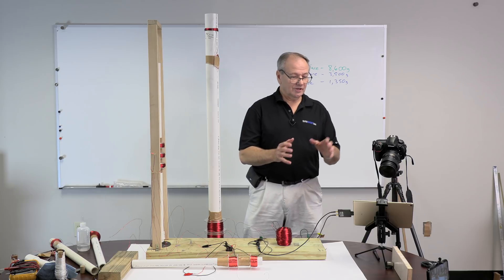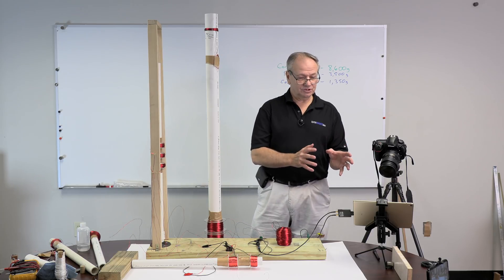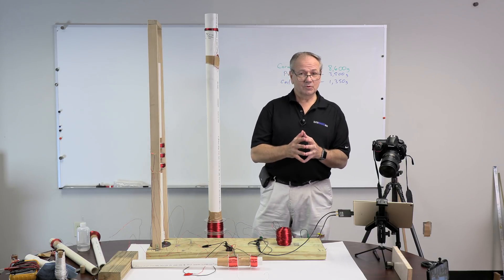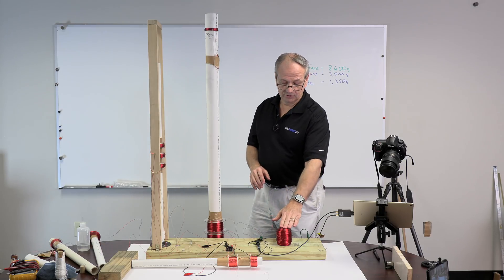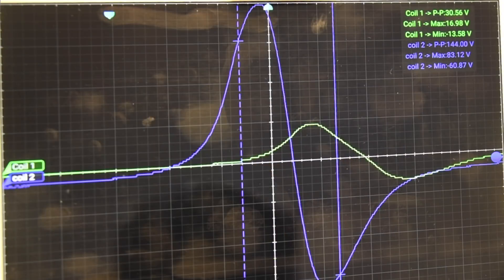Now we want to take a look at what we saw on the voltage output. Remember the numbers we were getting with open circuit. Now, the one that's powering this large coil and has the magnet inside of it, the green line is giving us 30.56 maximum peak to peak voltage and 16.98 volts. So we saw that maximum voltage drop quite a bit because we put a load on it.